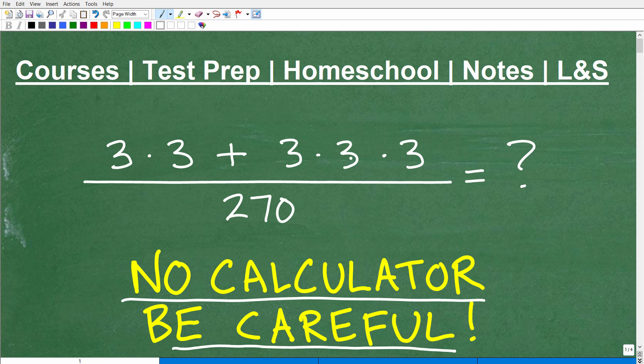But let's take a look at the problem. We have a fraction, and in the numerator we have 3 times 3 plus 3 times 3 times 3, all over 270. And again, the right answer here, I'm going to actually show you the right answer in a second, but to get to the right answer, there's different paths you can take.